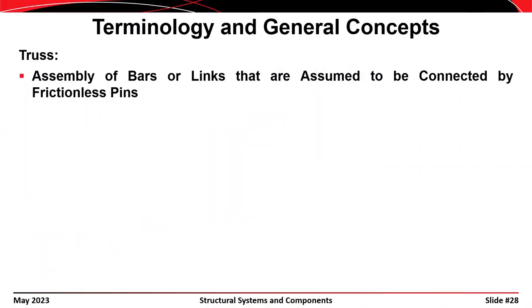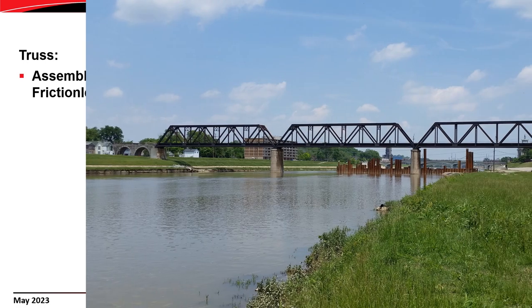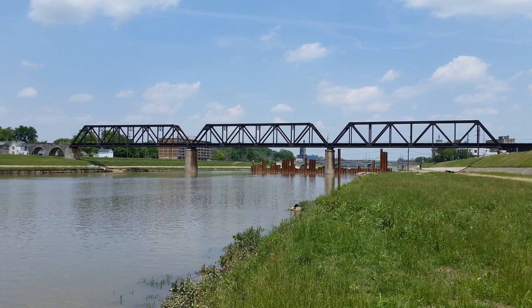A truss is an assembly of bars or links assumed to be connected by frictionless pins to form members. You can see trusses all over the place as bridges — this is a bridge in Hamilton, Ohio, crossing over the Miami River, and it's a good example of a Warren truss with verticals.